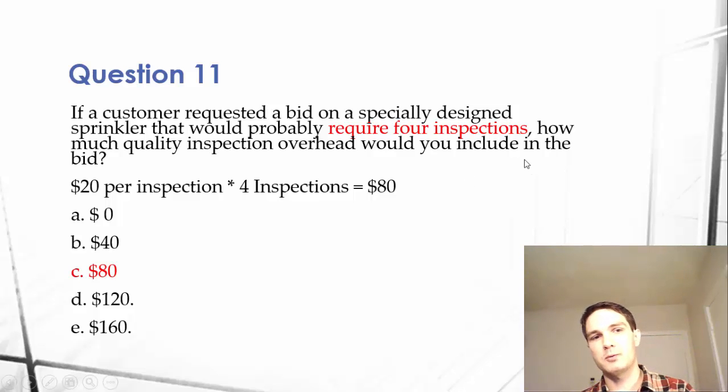You would include $80 because we calculated $20 per inspection and then found it's asking how much four inspections would cost. So we multiply that by four inspections. This is just one way of allocating overhead costs.